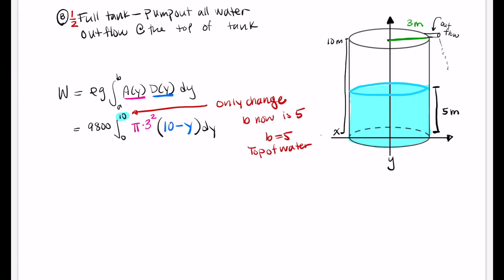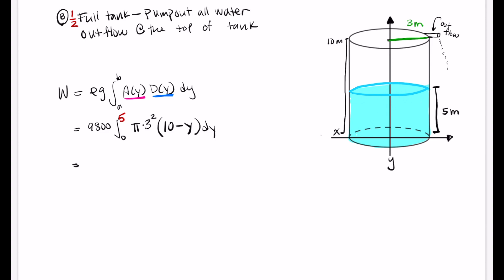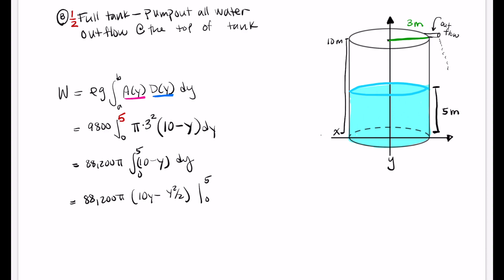Making that change, we have 88,200π times the integral from 0 to 5 of (10 minus y) dy. That gives 88,200π times [10y minus y squared over 2] evaluated from 0 to 5.